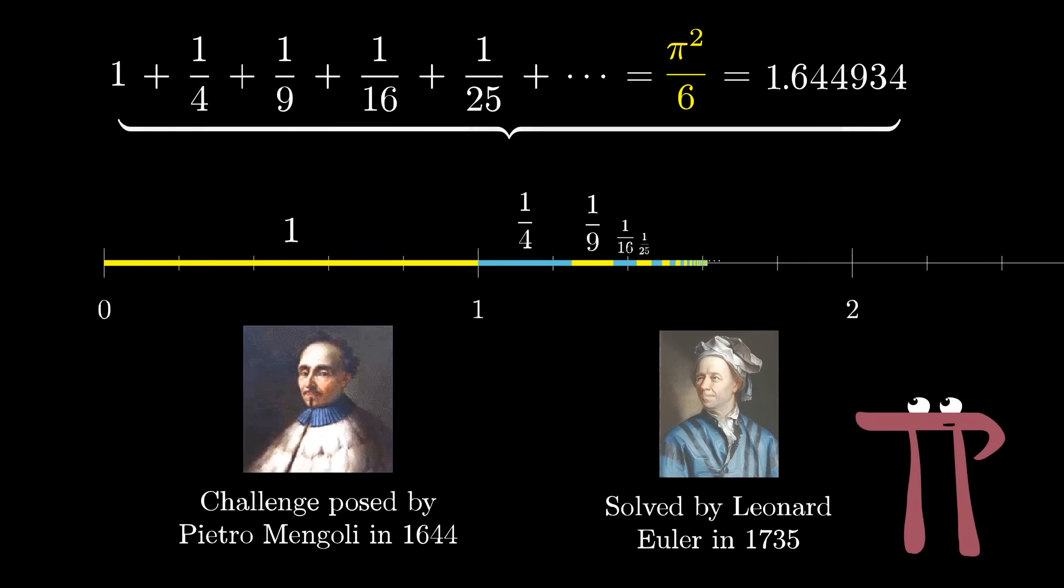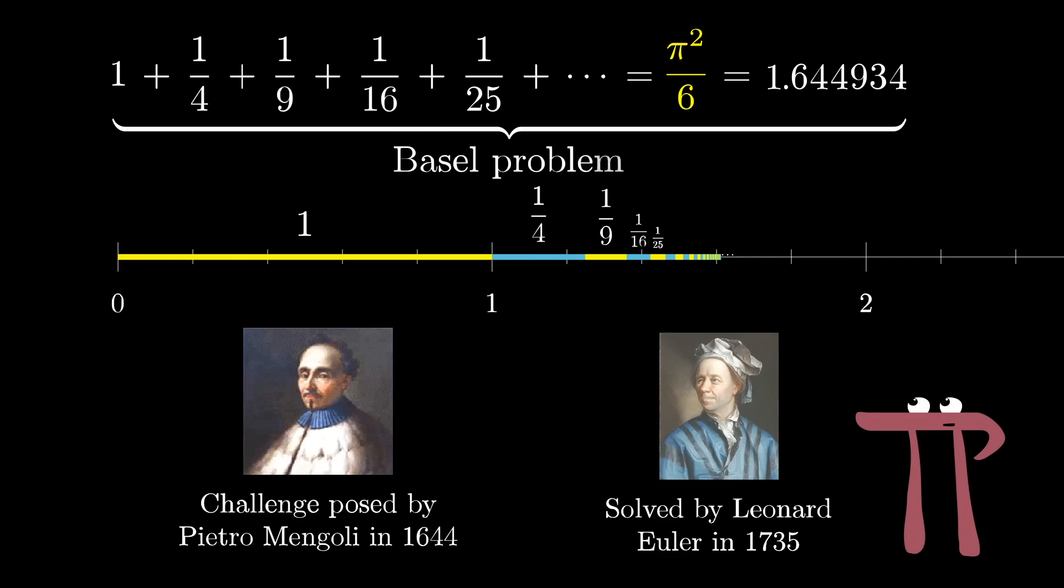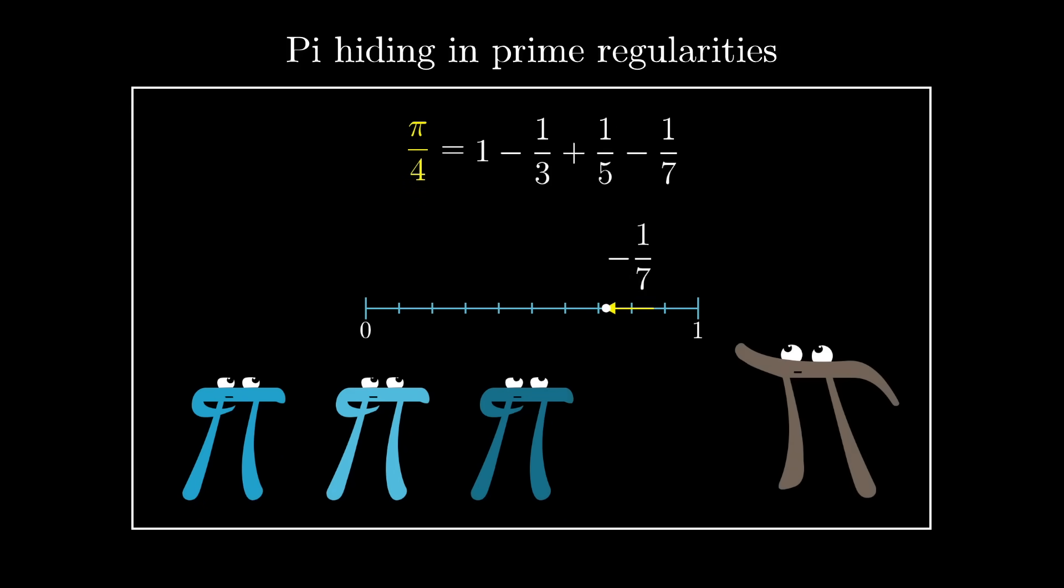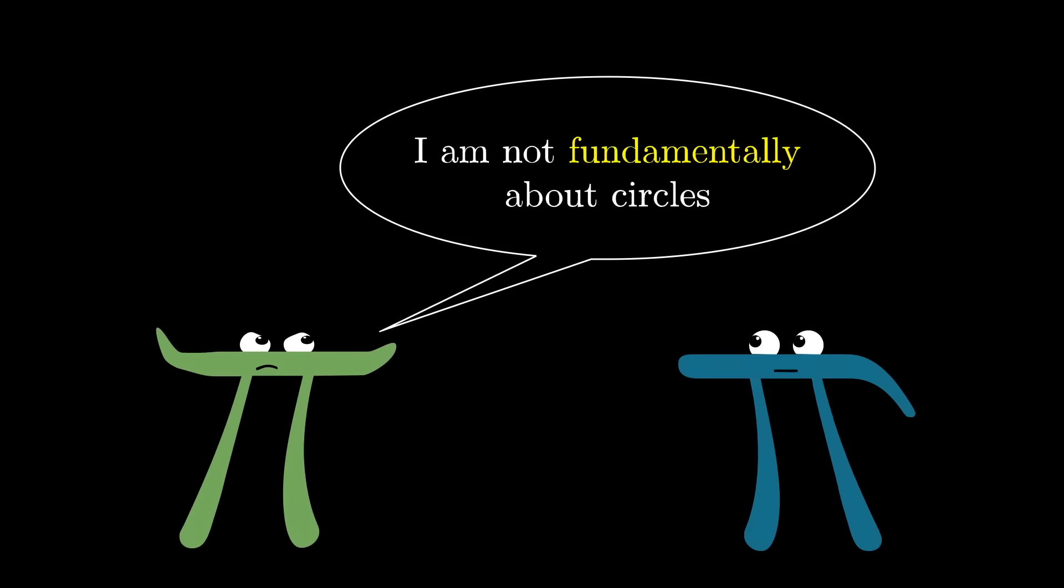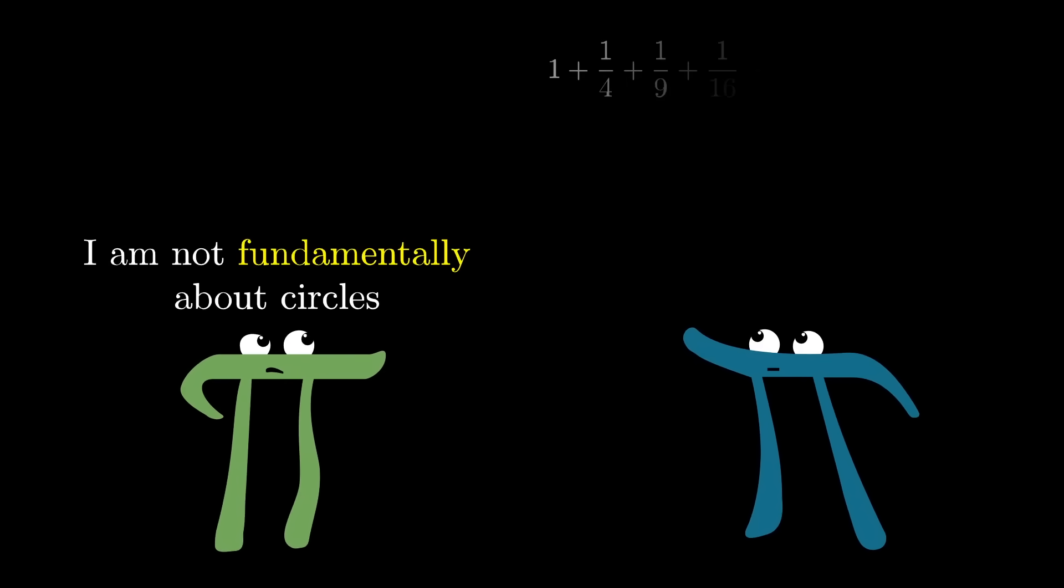In honor of Euler, whose hometown was Basel, this infinite sum is often referred to as the Basel problem. But the proof that I'd like to show you is very different from the one that Euler had.